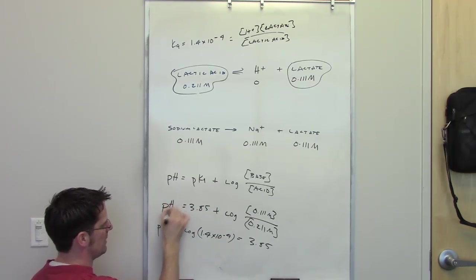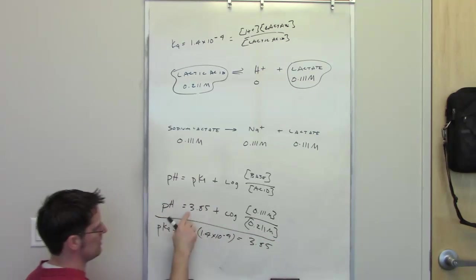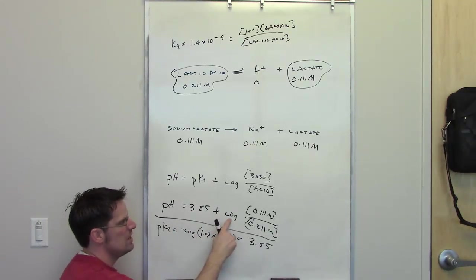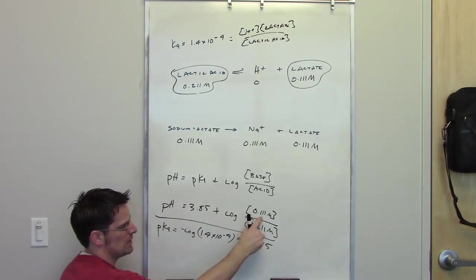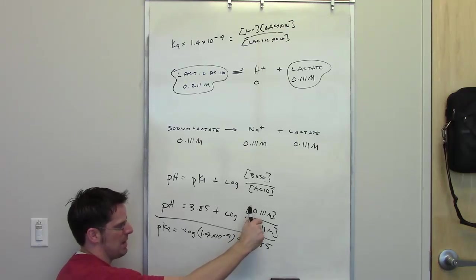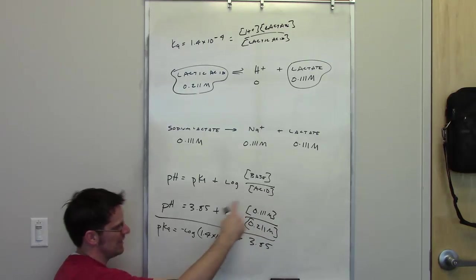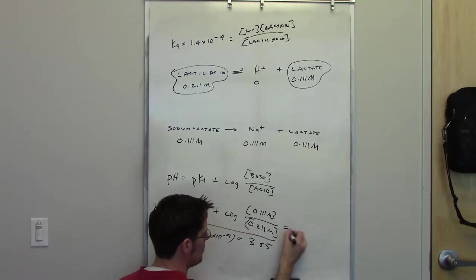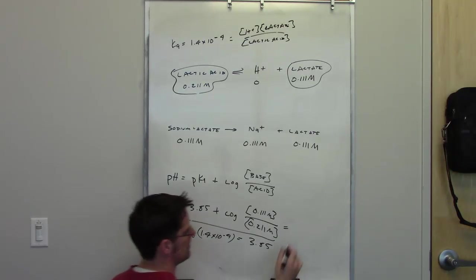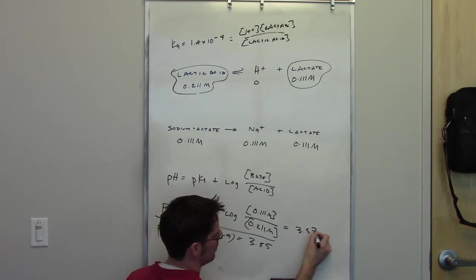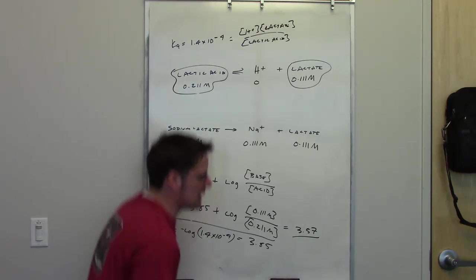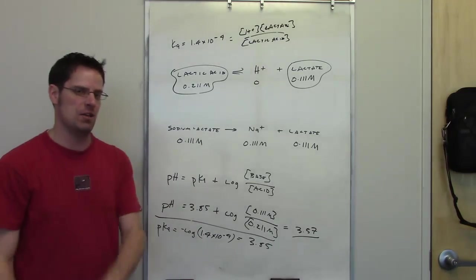So, the pH of this equilibrium system is going to be equal to 3.85 plus the log of 0.111 divided by 0.211. So, I'll mathematically take this number divided by that number, and get a new number. I take the log of that. That gives me this overall term, and I add that to 3.85. When I do that, the final answer that I end up getting comes to 3.57, which you'll see is the same pH that we calculated using the common ion effect approach.